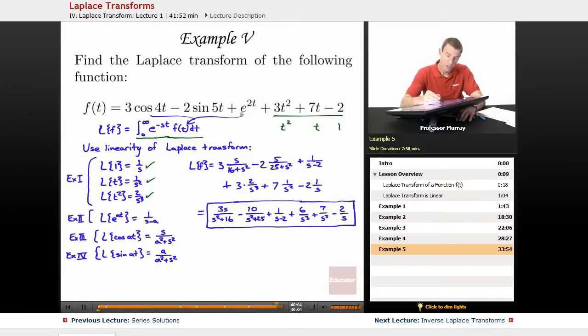e to the at, in example 2, I figured out its Laplace transform is 1 over s minus a. And then for the cosine and sine, I figured out the Laplace transforms of those in example 3 and 4. Those were s over a squared plus s squared and a over a squared plus s squared. So what I did was I took each of those functions and just plugged them back in here and then attached the right coefficients.